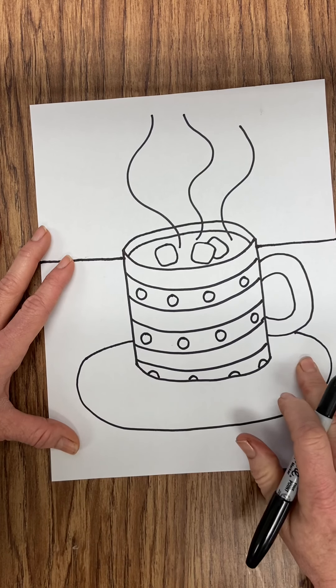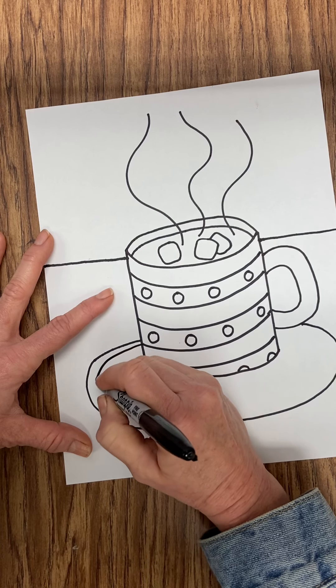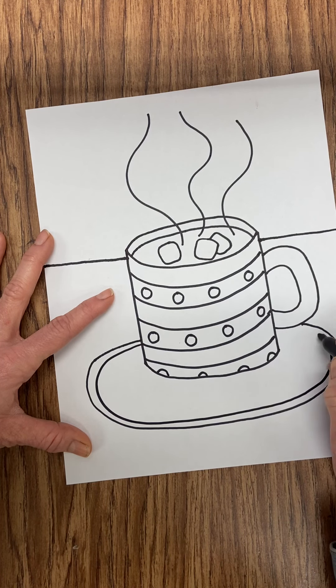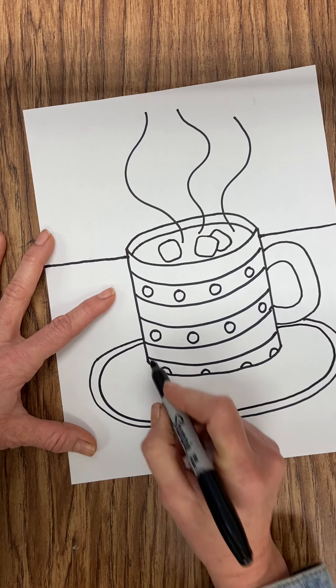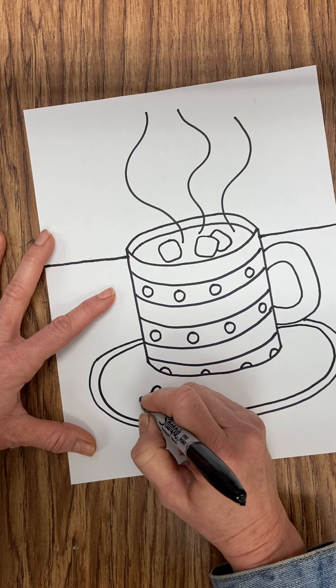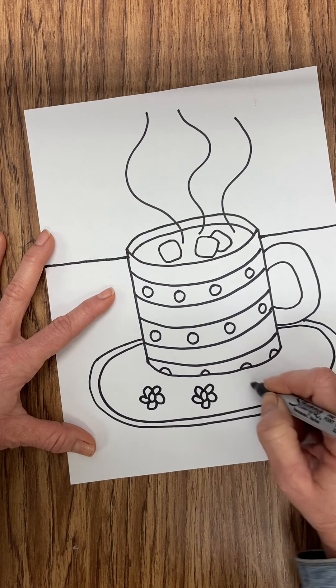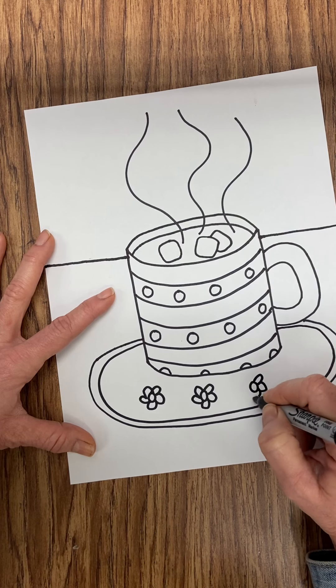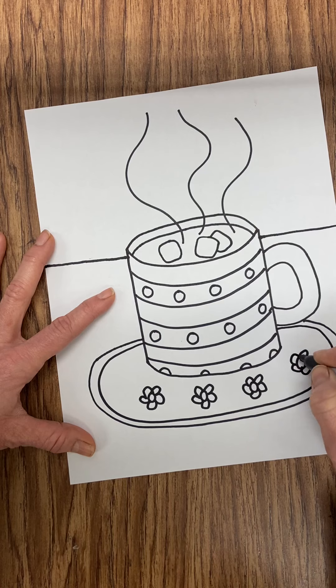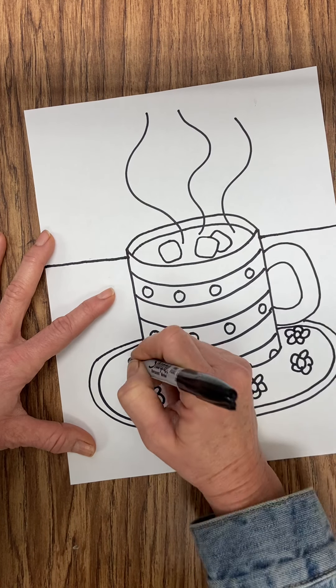Then come up with something for your saucer. What kind of pattern or design can you do on your saucer? I'm going to give my saucer a rim and then I'm going to give it some flowers. I'm going to do a repeated pattern of some flowers. Remember, boys and girls, come up with your own pattern design. It doesn't need to match mine. I want to see what your ideas are.